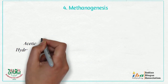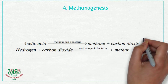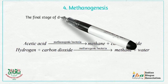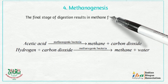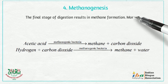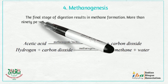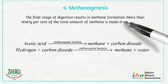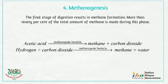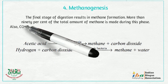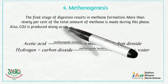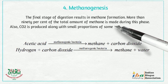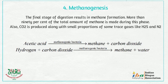4. Methanogenesis. The final stage of digestion results in methane formation. More than 90% of the total amount of methane is made during this phase. Also, CO2 is produced along with small proportions of some trace gases like H2S and N2.